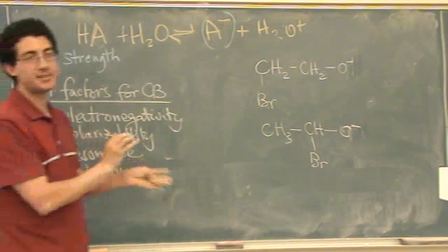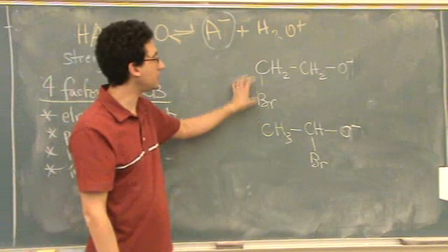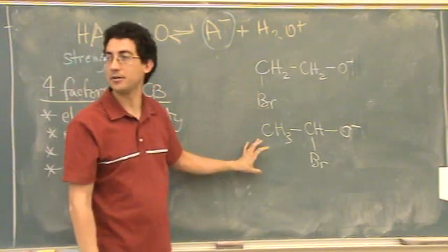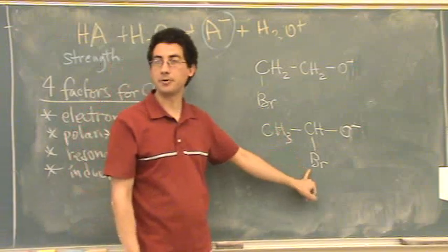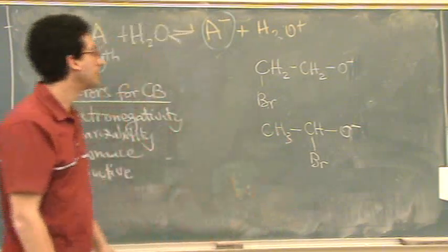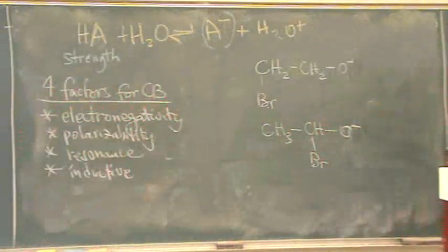So if that hydrogen falls off because it's the most acidic, we want to figure out which one is more stable. The one with the bromine further away or the one with the bromine closer.